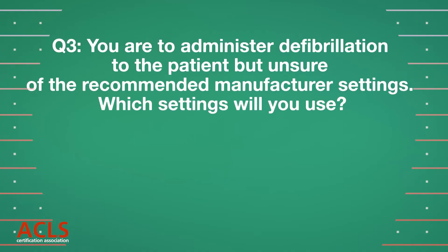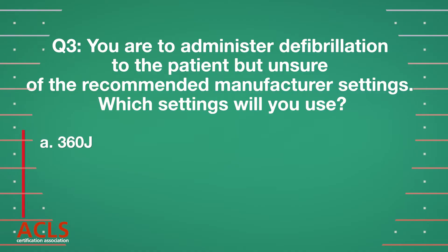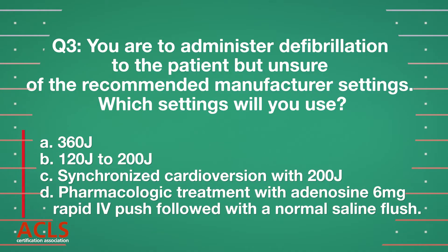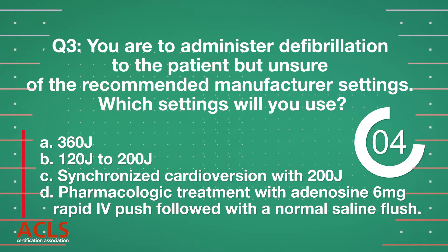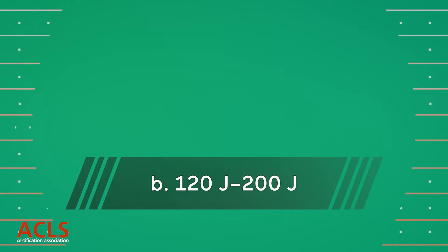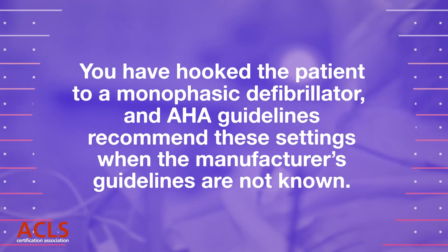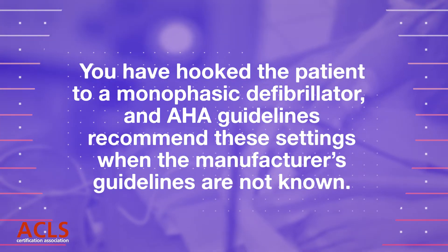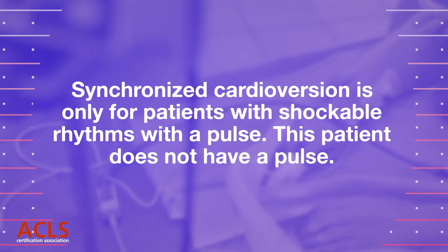Question 3: You are to administer defibrillation to the patient but are unsure of the recommended manufacturer settings. Which settings will you use? A. 360 joules. B. 120 to 200 joules. C. Synchronized cardioversion with 200 joules. D. Pharmacologic treatment with adenosine 6 mg rapid IV push followed by a normal saline flush. Correct answer: B. 120 to 200 joules. Note: synchronized cardioversion is utilized for shockable rhythms with a pulse.